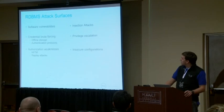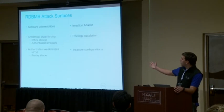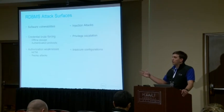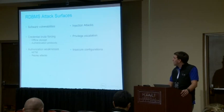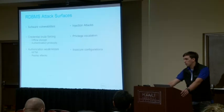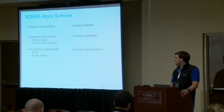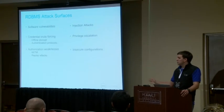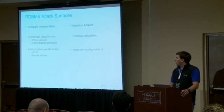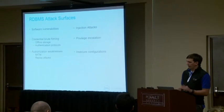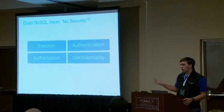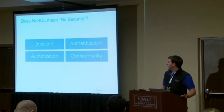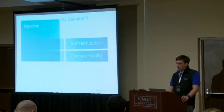In terms of attack vectors, you'll recognize a lot of these. At the top we have injection attacks — injection is number one on the OWASP Top Ten. We've got privilege escalation, credential brute forcing, authorization weaknesses, and generic software vulnerabilities. So if we have all these issues with relational databases and we've been using these solutions for years, what does this mean when we move to a NoSQL environment? Today specifically we're going to focus on injection, authentication, authorization, and confidentiality, and how they're being implemented in the NoSQL world.